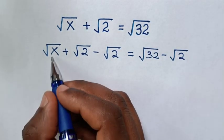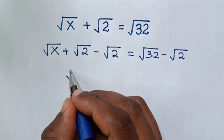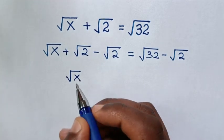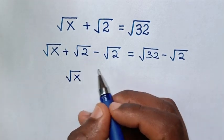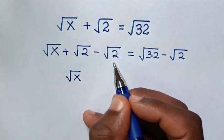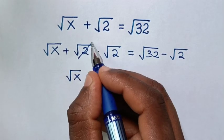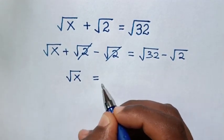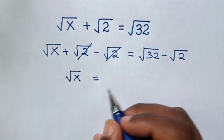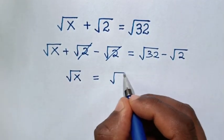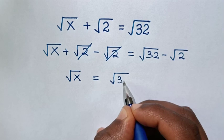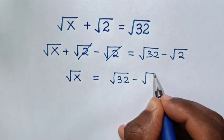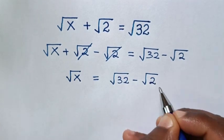Then in the next step it will be square root of x. The square root of 2 minus square root of 2 is 0, so these cancel. Then it will be equal to square root of 32 minus square root of 2.